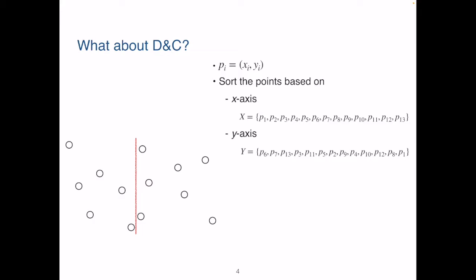Each point p is represented using its xi and yi coordinates. We sort the points based on their x-coordinate and y-coordinate, which gives us two lists of all the points sorted.